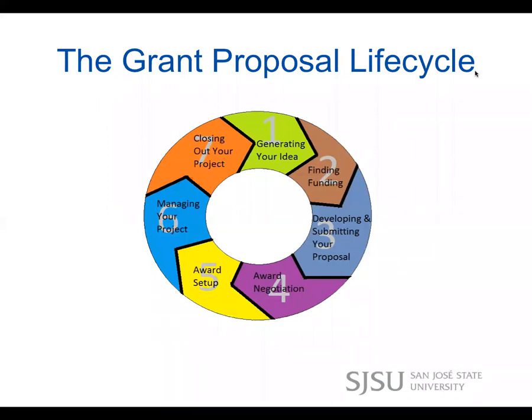At San Jose State, we have two auxiliaries that help you put forward grant proposals, and you use a different one depending on the nature of your funding source — federal or private. The Research Foundation, represented today by Angela Au, is the auxiliary you use when putting forth a proposal to a public funder like the government, the county, or the state. The Tower Foundation is the auxiliary you use if you're putting forth a proposal to a private funder like a foundation.